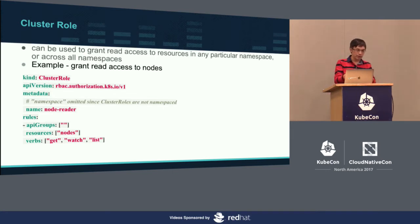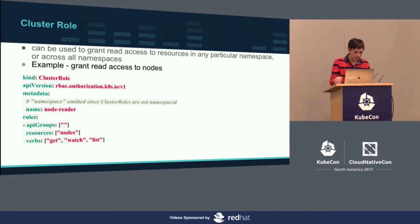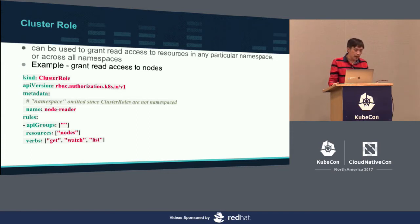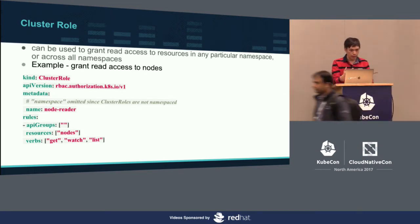Here's an example of a ClusterRole. I did a dump using kubectl output. The kind is ClusterRole. The metadata name is 'node-reader.' Looking at the rules: it doesn't limit to any API groups, the resource specified is just nodes, and the actions you can do are get, watch, and list. That's why it's called node-reader—that's how you control what a particular subject can do.